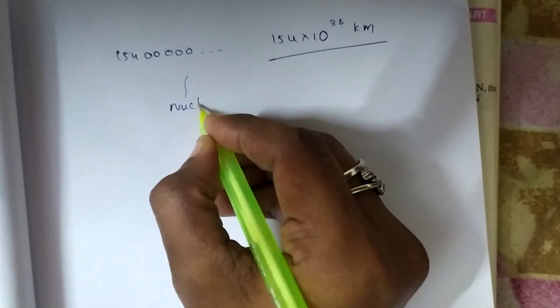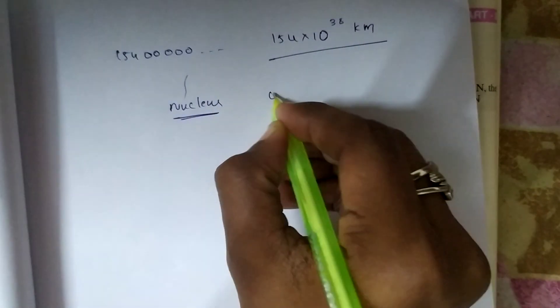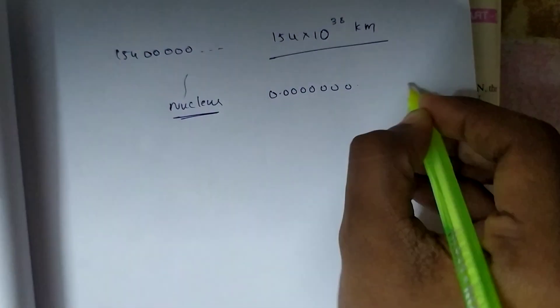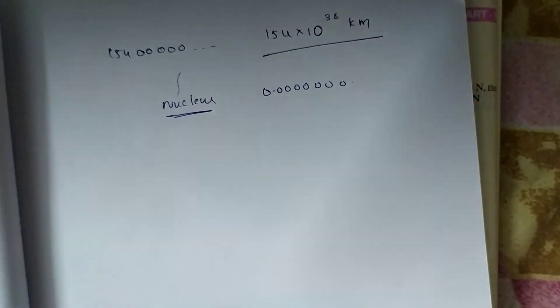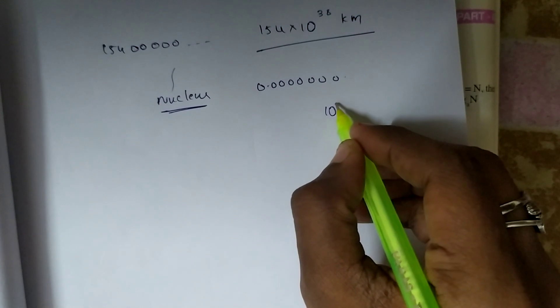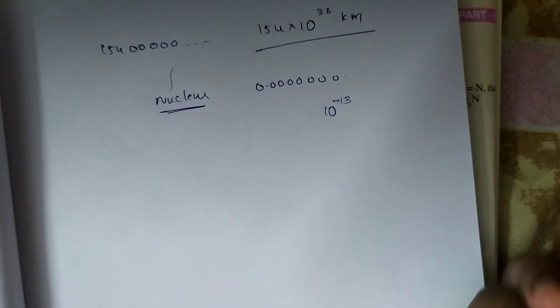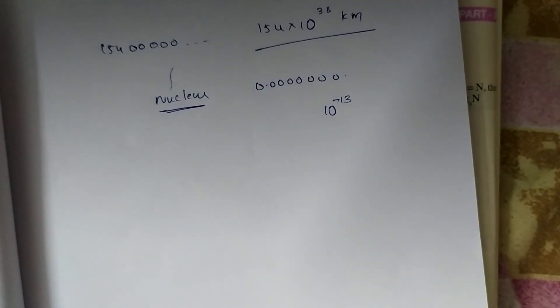At the same time, exponentials can describe very small objects also. For example, if you want to tell the size of the nucleus, it would be like 0.0000000000... it goes on. So instead of writing all those zeros, you can write it like 10 to the power of minus 13. So exponential is basically used to tell the biggest as well as the smallest distance or anything.